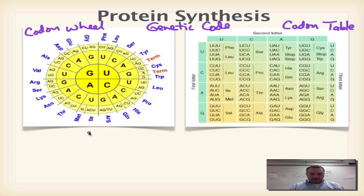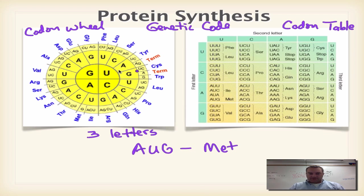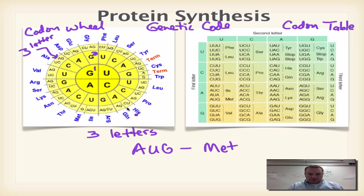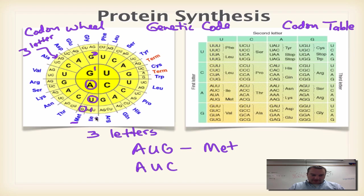A codon has three letters. For example, let's do the start codon AUG. We already know that AUG codes for methionine. On the codon wheel, the dark inner ring is the first letter, the next shade is the second letter, and the outer layer is the third letter. So A-U-G gives us methionine. Let's try another one: AUC — that is isoleucine, abbreviated ILE.